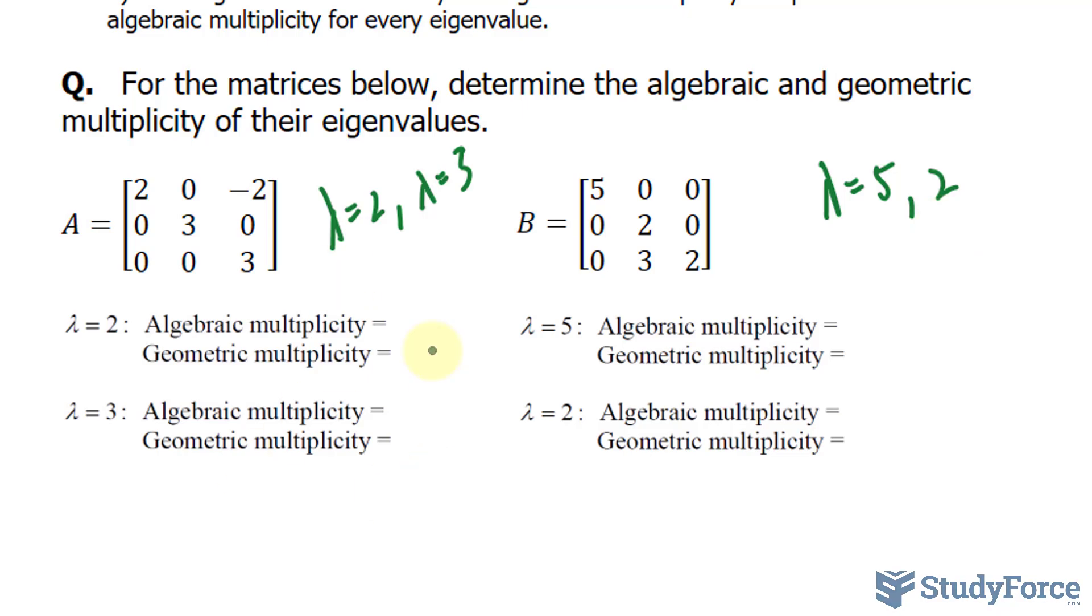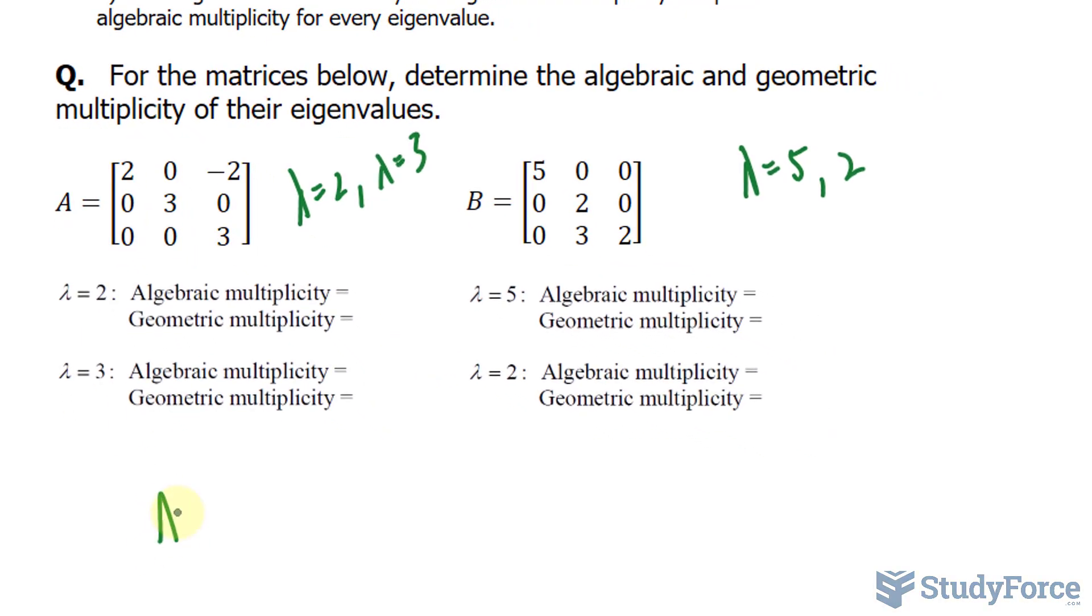In order for you to fill these in properly, you need to substitute these values back into the expression A minus lambda times its identity, that's the eigenvalue. And then reduce that into row echelon form. Once you do that, you can then find the eigenvectors.